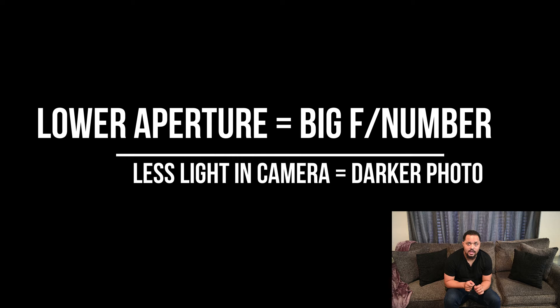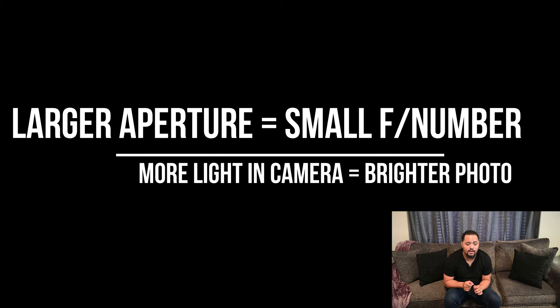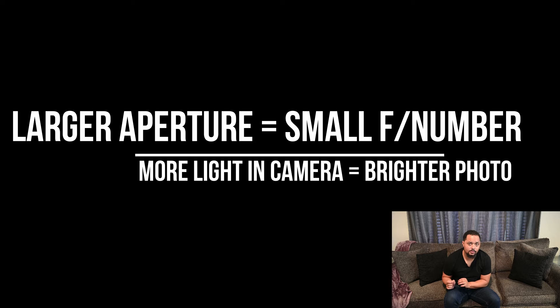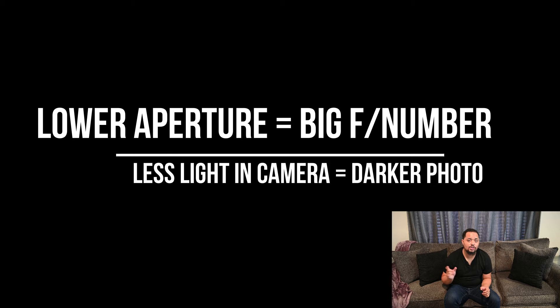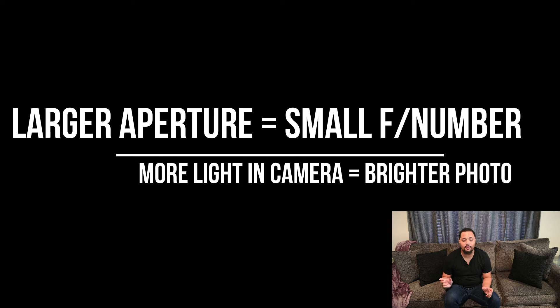Part two: when you have a lower aperture — which is a bigger f-stop number — that equals less light in the camera, which equals a darker photo. A larger aperture — which is a smaller f-number — equals more light in the camera, which equals a brighter photo. Lower aperture: less light, darker photo. Larger aperture: more light, brighter photo.